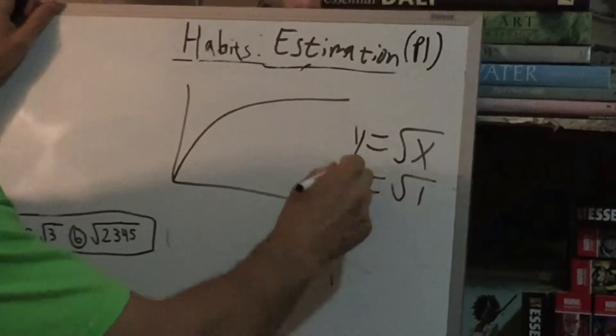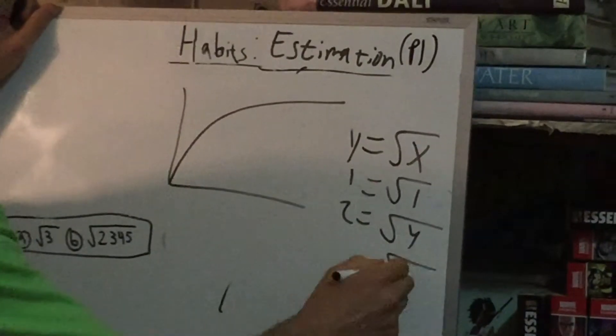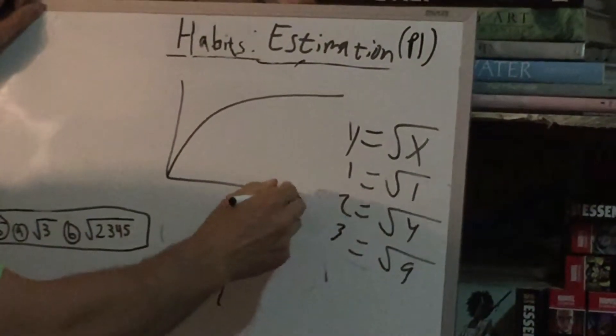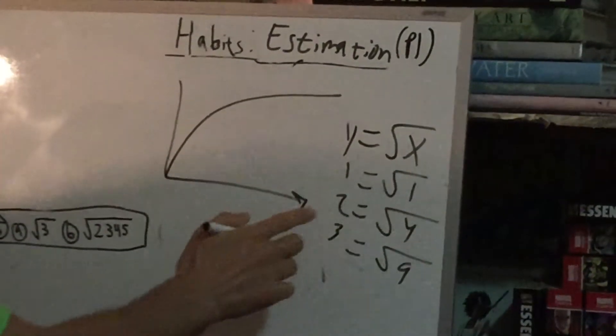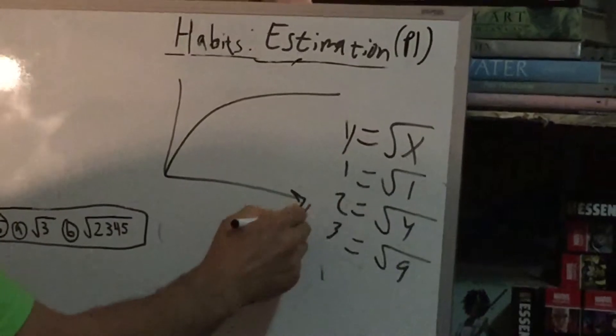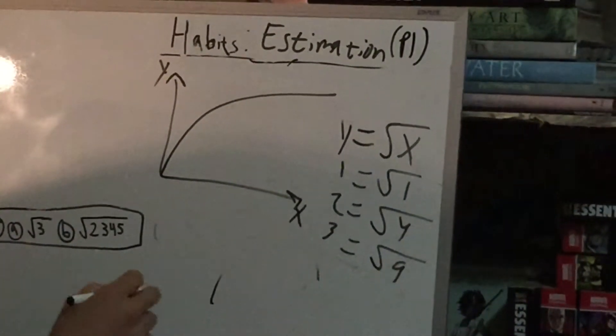So the square root of 1 is 1. The square root of 4 is 2. The square root of 9 is 3. So if we plug in these points, this would be our plot. So let's say this is our x, and that's our y. So let's take a look.